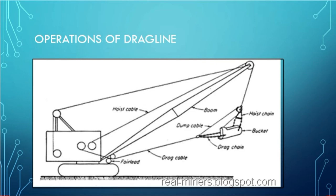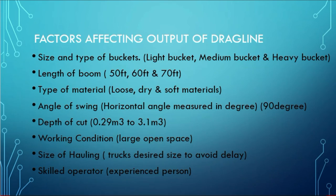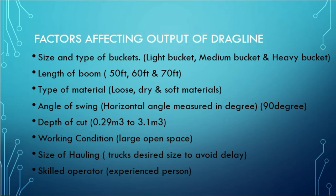It is also available in a trailer-mounted type. The factors affecting the output of the drag line are: type of bucket, length of boom — which mainly varies as per the requirement — type of material, and depth of cut. It can go up to 3.1 m³. Working condition requires a large open space. It can work over a larger area than the power shovel and its efficiency is higher compared to the power shovel.